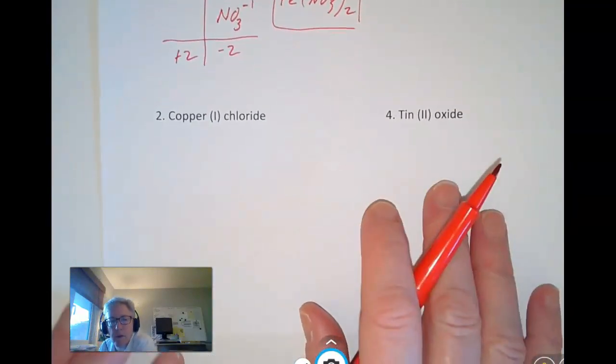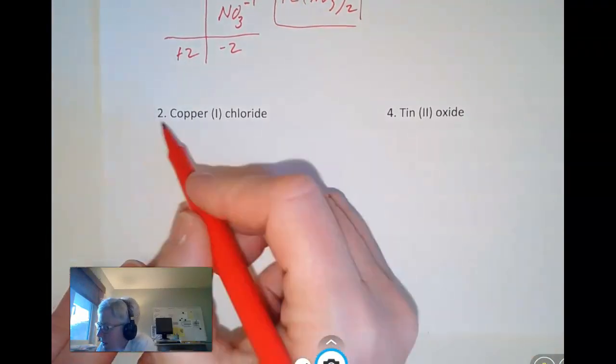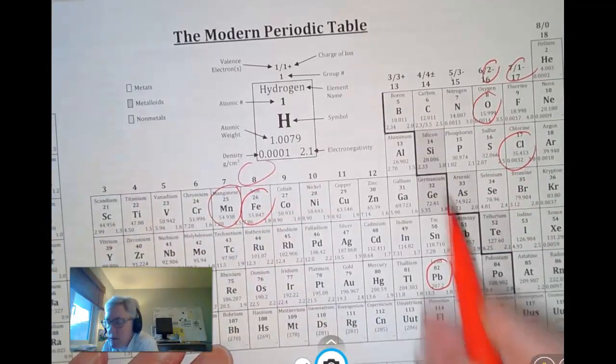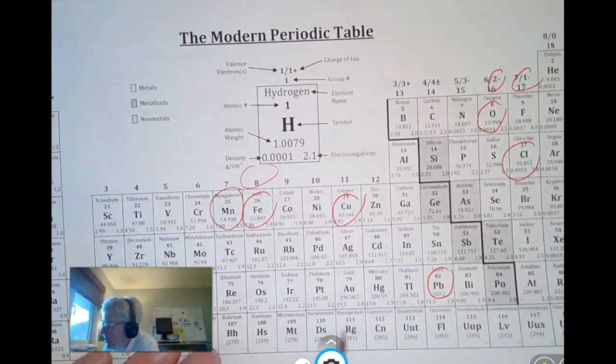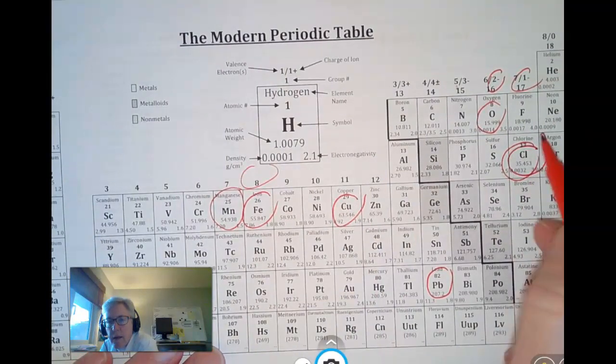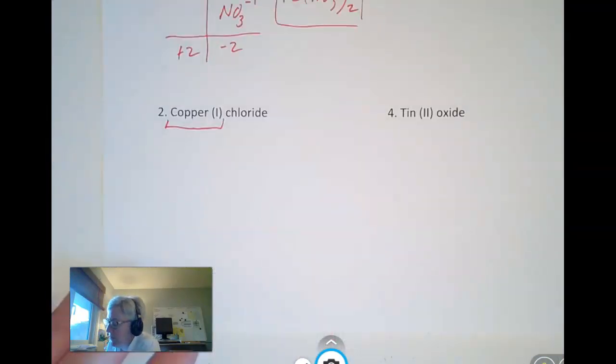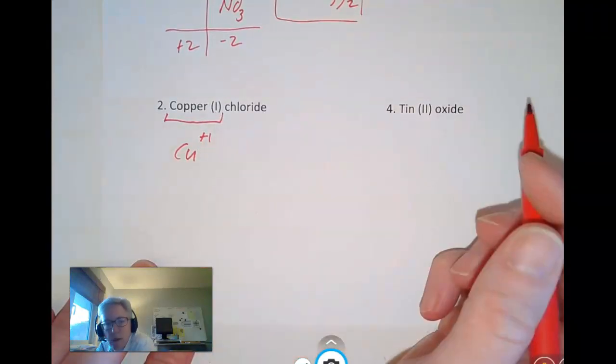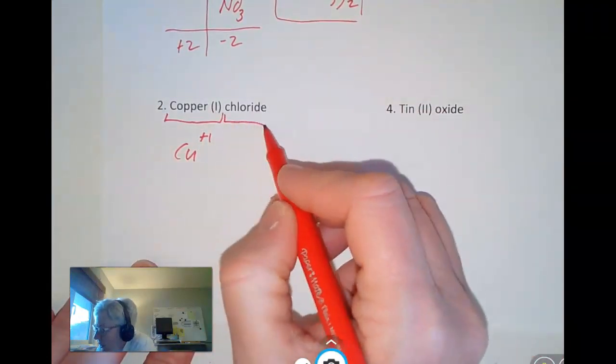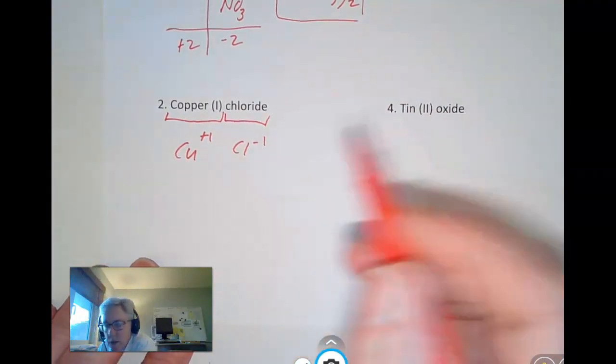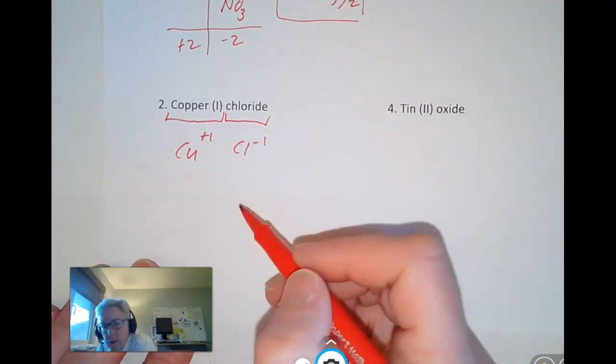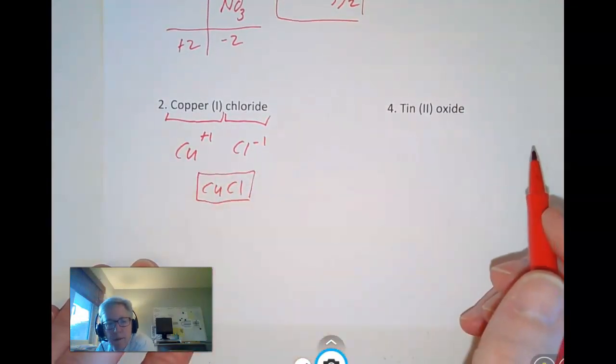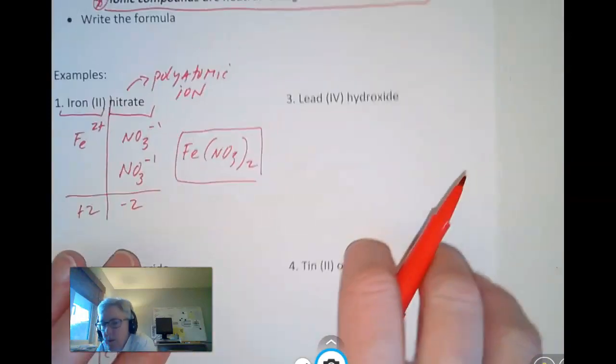Let's do this one. Copper 1 chloride. Copper, Roman numeral 1. Here's copper. The symbol for copper is Cu. Chloride, again, is right there with a minus 1 charge. So copper, Roman numeral 1 means it has a plus 1 charge. Chloride is Cl with a minus 1 charge. So that was not too bad. I got one of those and one of those. I could just write my formula just like that. Cu, Cl.